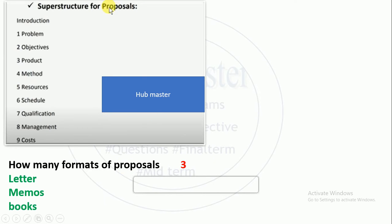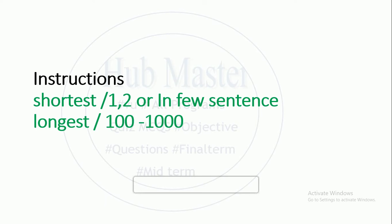How many formats does a proposal have? Next, let's look at instructions. Instructions are the shortest ones — they are 1 or 2 sentences, or 1 or 2 paragraphs. The longest ones are 100 to 1000 sentences.